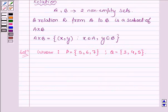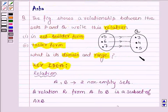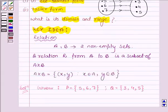Now from the adjoining figure it is clear that the image of element 5 is 3, 6 is 4 and 7 is 5. The relationship between the first element and the second element of the ordered pair is given by